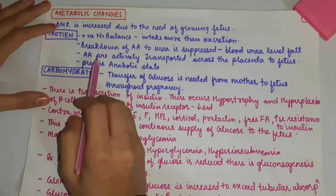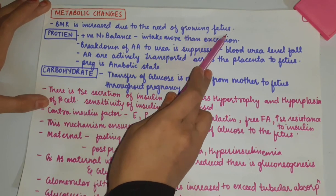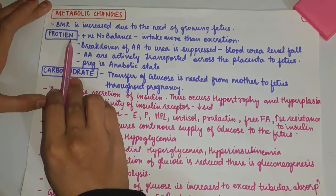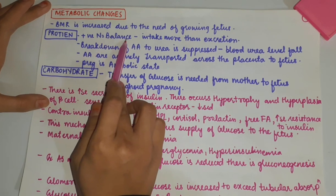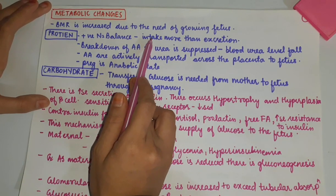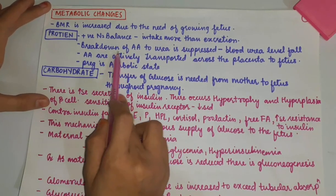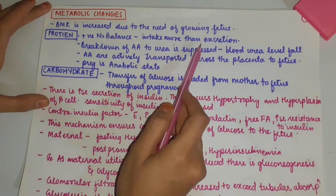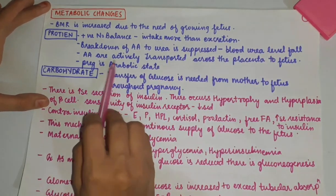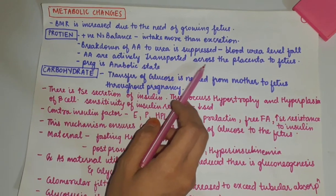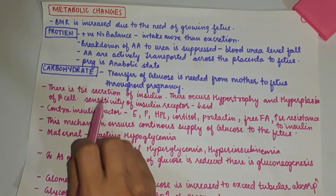Now we will see metabolic changes. BMR is increased due to the needs of the growing fetus. Regarding protein, there is a positive nitrogen balance — intake of nitrogen is more than its excretion. Breakdown of amino acids to urea is suppressed, blood urea level falls, and amino acids are actively transported across the placenta to the fetus. Pregnancy is an anabolic state.